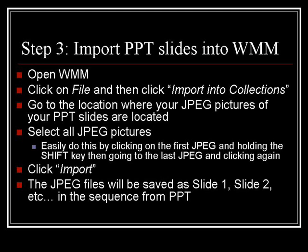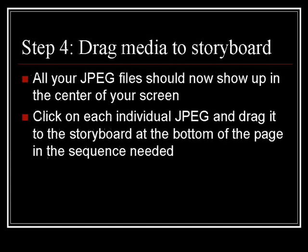In this step, you import your PowerPoint slides into Windows Movie Maker. Open Windows Movie Maker, click on File, and then click Import into Collections. Go to the location where your JPEG pictures are located and select them all. You can easily do this by clicking on the first JPEG, hold the Shift key, and then go to the last JPEG and click again. Click Import, and the JPEG files will be saved as slide 1, 2, 3, etc. in the sequence from PowerPoint. All your JPEG files should be showing up in the center of your screen. You need to click on each individual JPEG and drag it to the storyboard at the bottom of the page in the proper sequence.